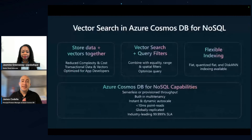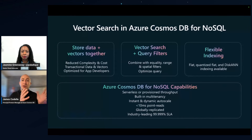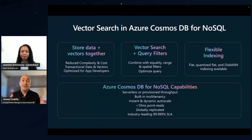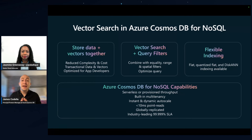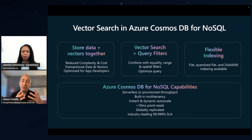Thousands of customers are already doing this today. At Build, we were really excited to announce vector search in Azure Cosmos DB for NoSQL, which empowers customers to realize these scenarios. We're able to store our data and our vectors together to reduce complexity, cost, and the sophistication of our generative AI architectures. We can store transactional and operational data together with our vectors, and we're able to execute vector search with all of the Cosmos DB query filters — all the rich where clauses, filters, spatial indices — everything you know and love about Cosmos DB for NoSQL query, you can use in conjunction with vector search today.